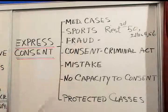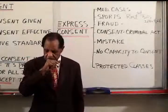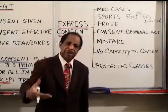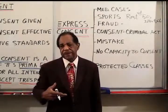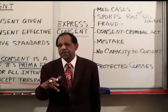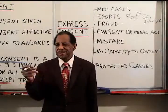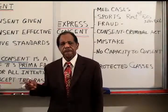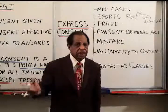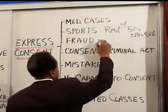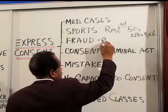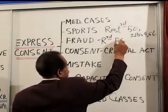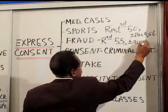The fraud example about deceiving a person into believing they were married — that the consent to sex is not effective in that case — but paying a prostitute with a counterfeit $100 bill where consent is effective — those examples come from Restatement Second, section 55, illustration 2.